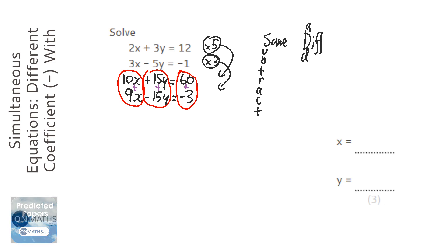So 10x plus 9x is 19x. 15y plus minus 15y is nothing, which is good, so we need it to be nothing. And 60 plus minus 3 is going to be 57.